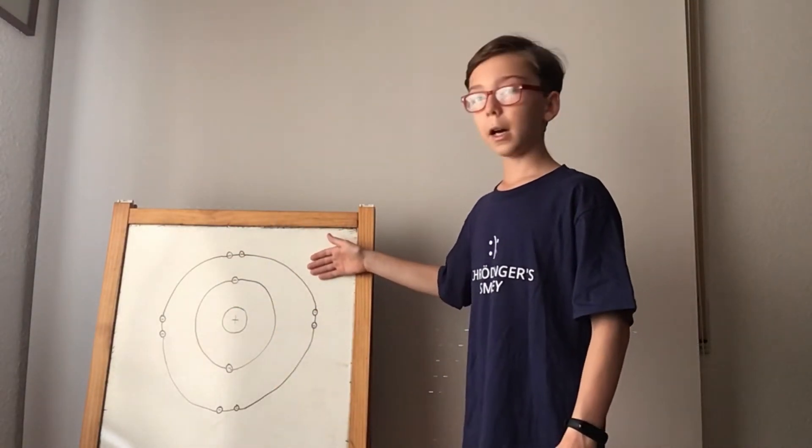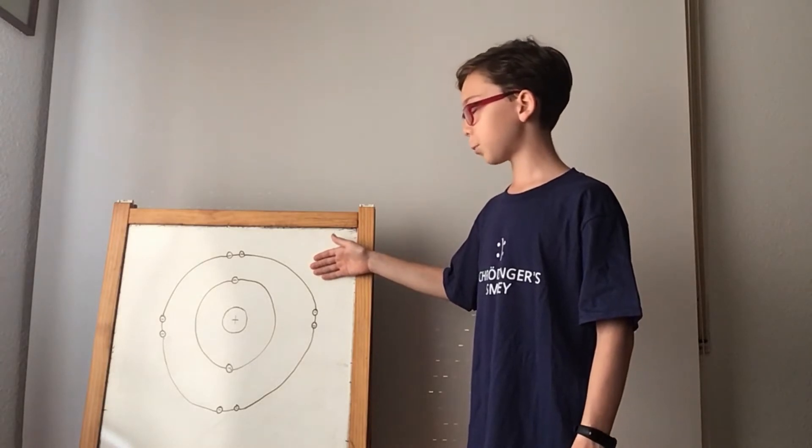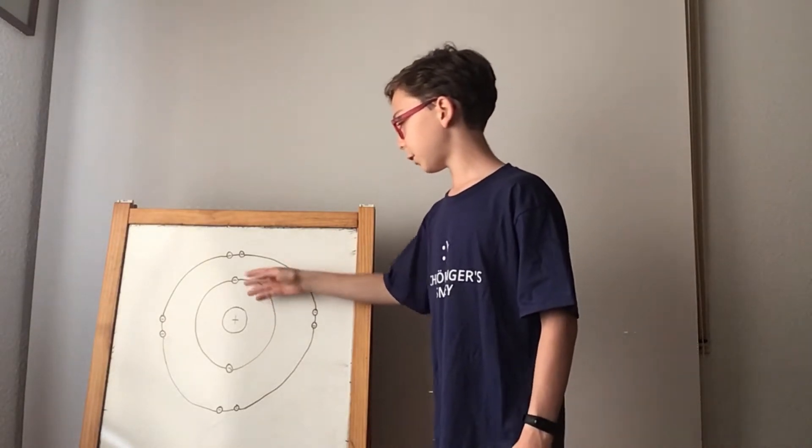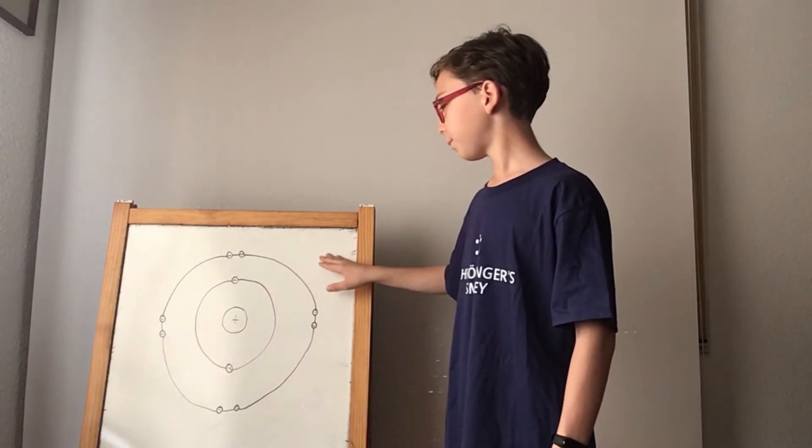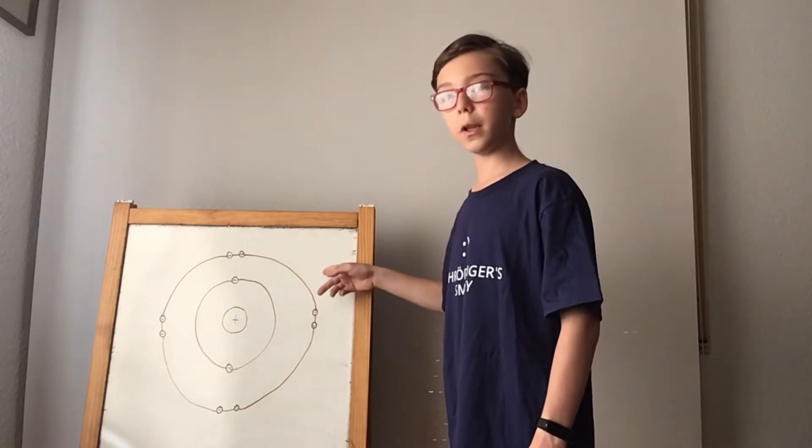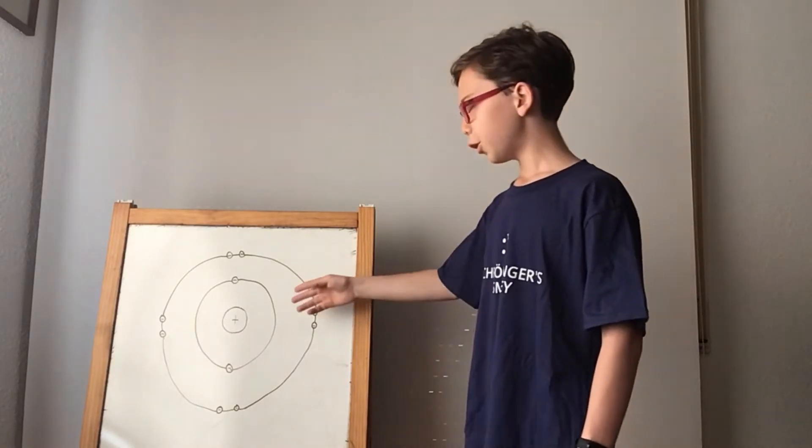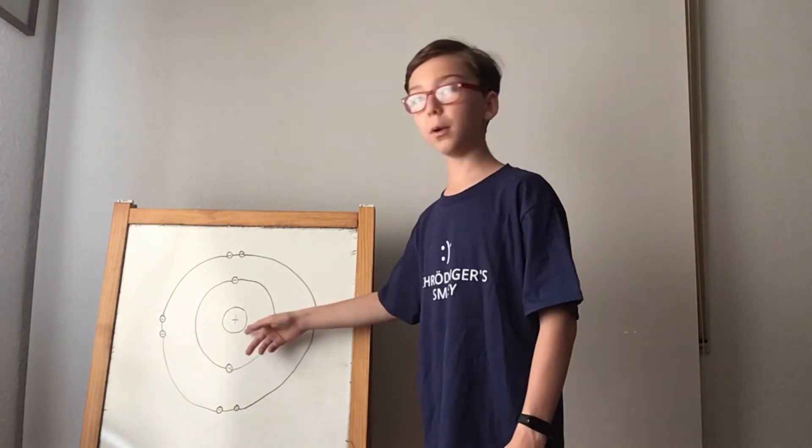We have here a Bohr model of an atom, specifically a neon atom. We have the electrons here in shells, and the further out the electrons are, the more energy they have. For example, these have low energy.